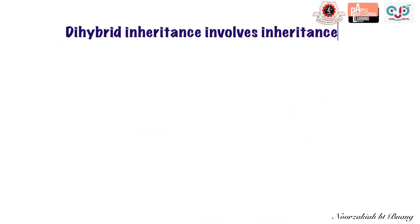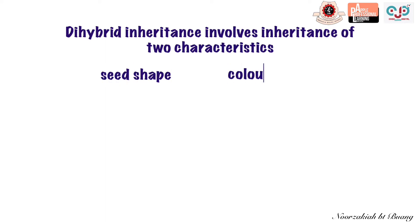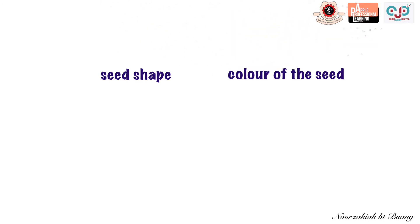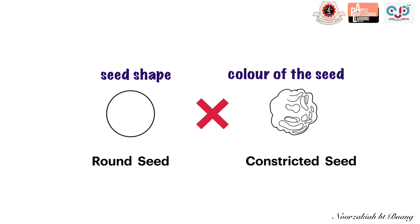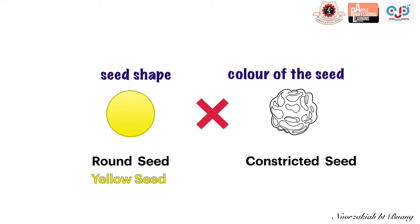Dihybrid inheritance involves inheritance of two characteristics, like seed shape and colour of the seed. For seed shape, round seed is a dominant trait while constricted seed is a recessive trait. For the colour of the seed, yellow seed is a dominant trait while green seed is a recessive trait.